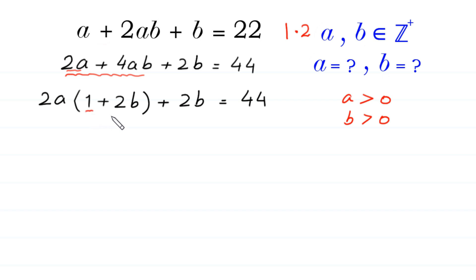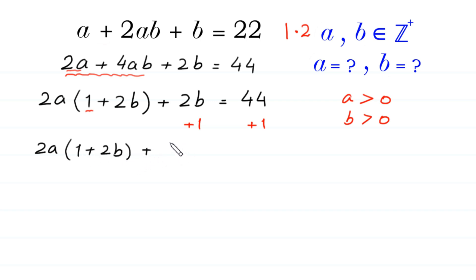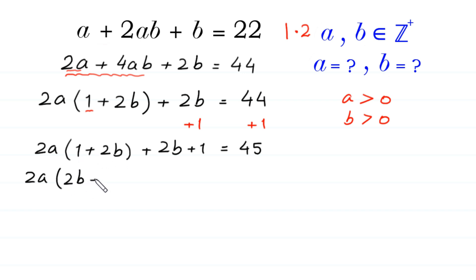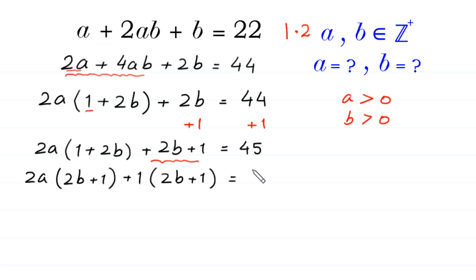Now, because here we have 1, we add 1 to both sides of this equation. Then this equation becomes 2a(1 + 2b) + 2b + 1 = 45. We rewrite 1 + 2b as 2b + 1, and from 2b + 1 we can factor out (2b + 1) as a common factor.